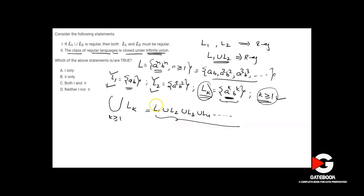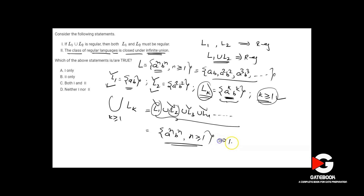This is an infinite union because the number of languages is infinite, yet each language is regular since each is finite. But their infinite union equals {a^n b^n | n ≥ 1}, which is not regular. So even though each language is regular, their infinite union is not regular — proving that the class of regular languages is not closed under infinite union.